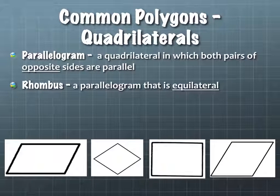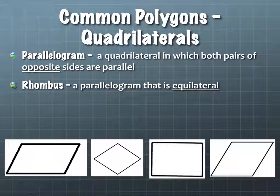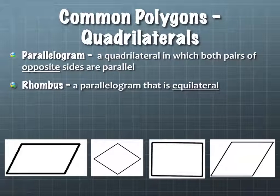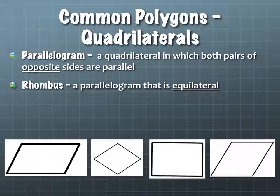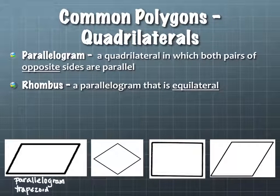There are four pictures below. We're going to label them with every definition that fits. The first one — what would you say is a good description? It's a parallelogram. But if it's a parallelogram, it's also a trapezoid. Every time I write down parallelogram, I can write down trapezoid, because a trapezoid is just a broader description of a quadrilateral than a parallelogram.